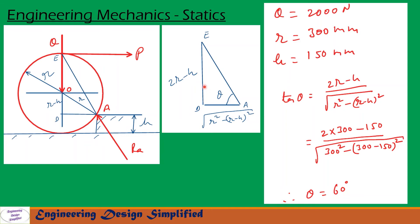In this triangle, tan θ can be written as: tan θ = (2r - h) / √[r² - (r - h)²]. After substituting the values and simplification, we get θ = 60°.